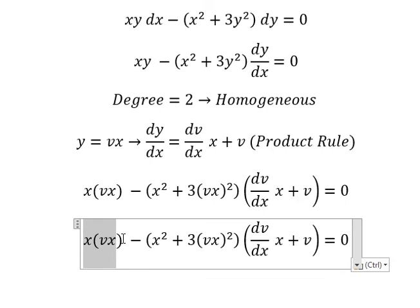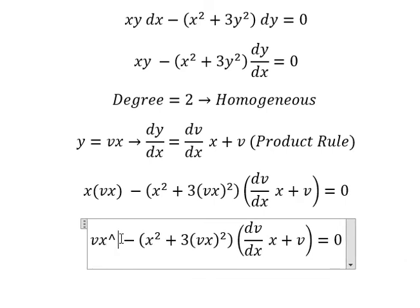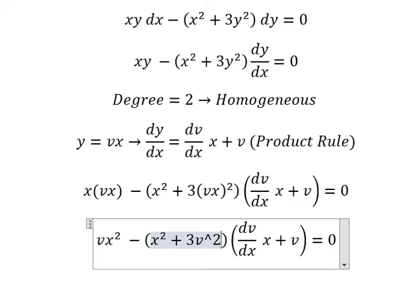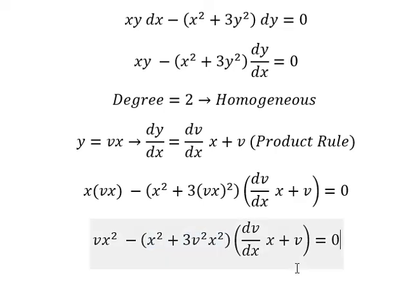So this one, we have vx square. This one, we have v square x square. So we have x square, x square, and x square. We cancel.